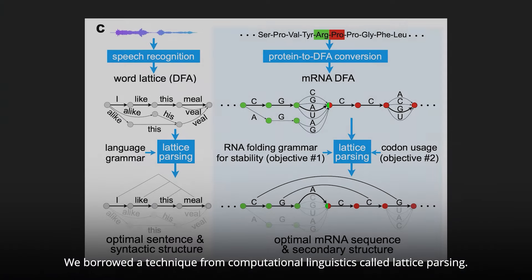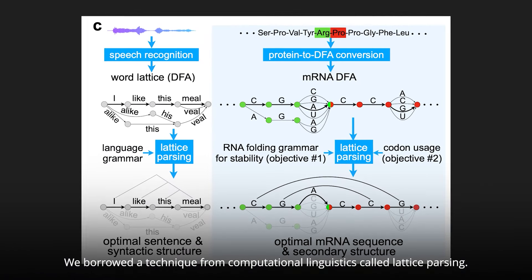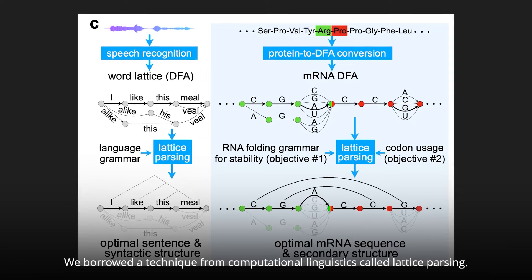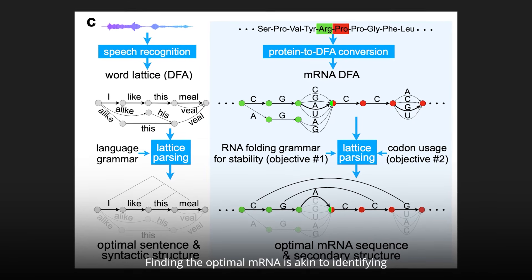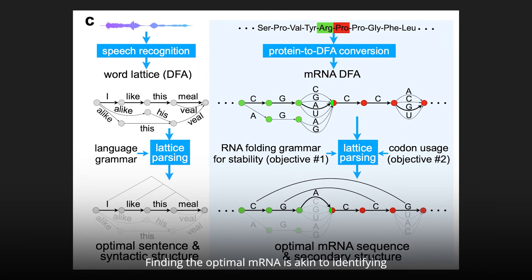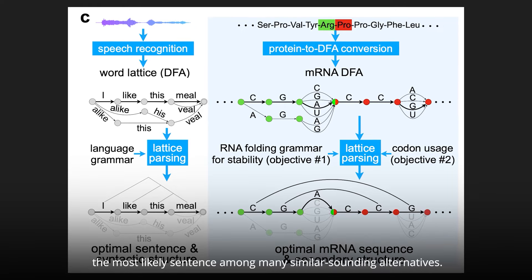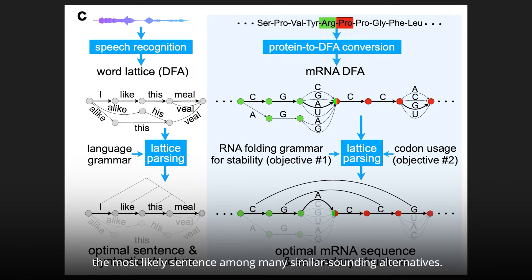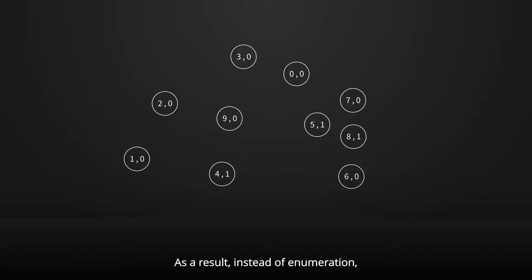We borrowed a technique from computational linguistics called lattice parsing. Finding the optimal mRNA is akin to identifying the most likely sentence among many similar-sounding alternatives.